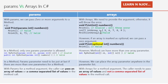Now let's look at params versus arrays. They look similar, but there are key differences. Difference one: with params, we can pass zero or more arguments — calling a print method with no argument is valid. With arrays, we need to provide an argument, otherwise it throws an error. However, if an array parameter is marked as optional, we can call it without any argument and it will be valid.